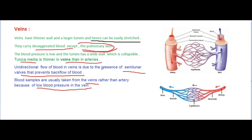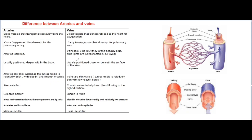Here we can see the difference between arteries and veins in the picture. In this image you can see arteries and veins with their outer layer, muscle, elastic layer. Valves are present in veins but absent in arteries. You can also see the inner layer, coloration, and wall thickness differences.